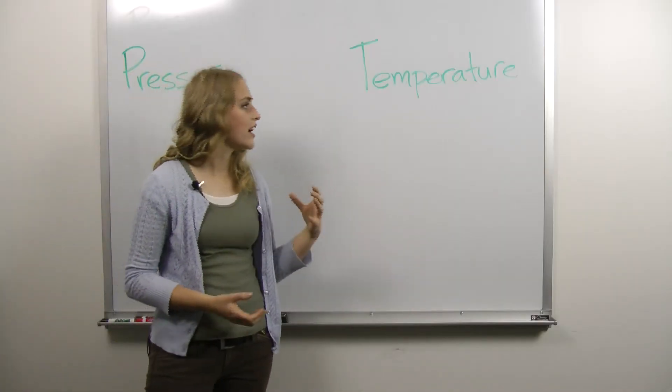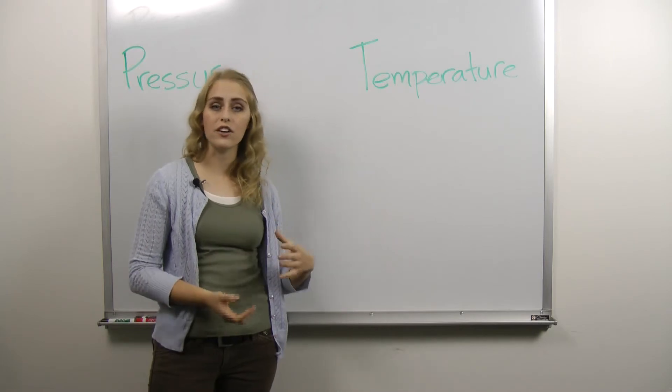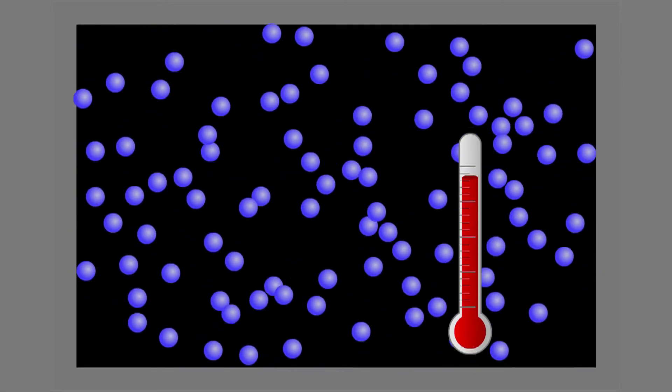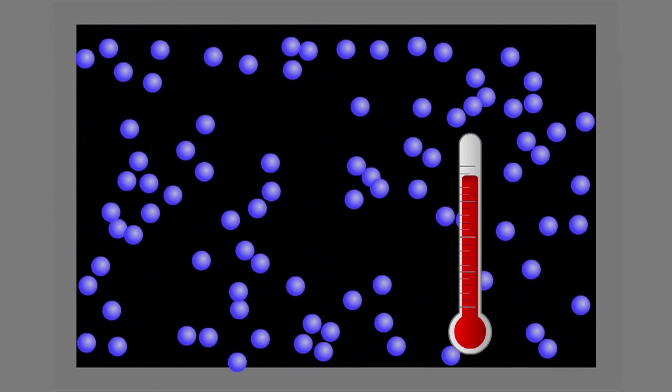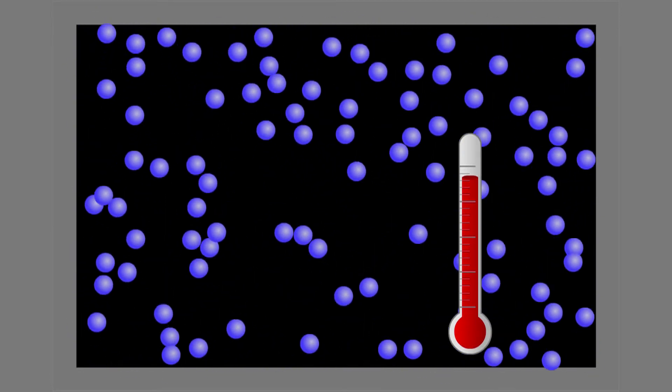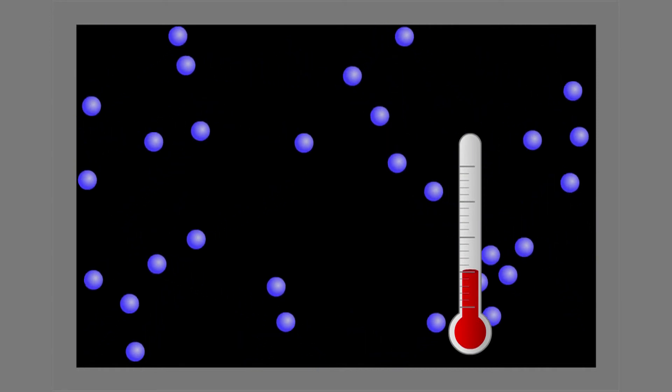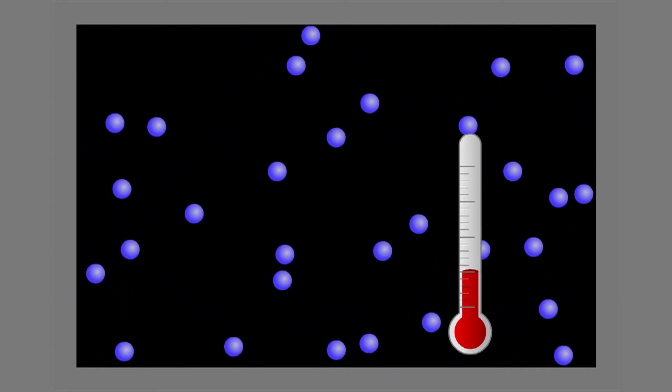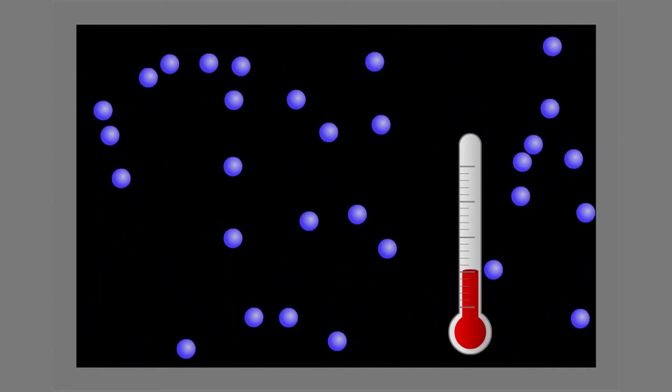Temperature, on the other hand, is a measure of the motional energy on the inside of the canister. You can think about it a little bit as how much motion is going on inside. So when we lower the pressure, there's less motion going on on the inside, and so the temperature that we measure goes lower.